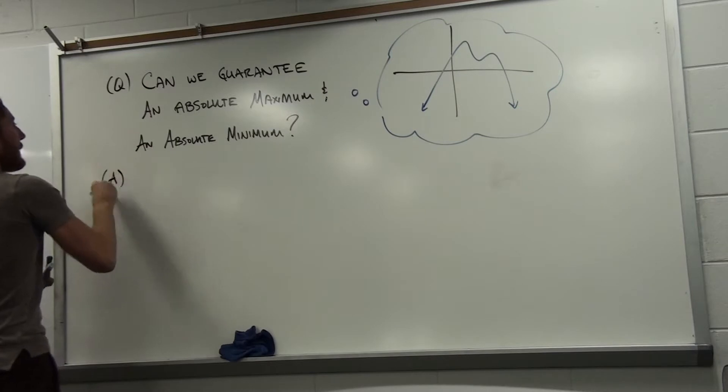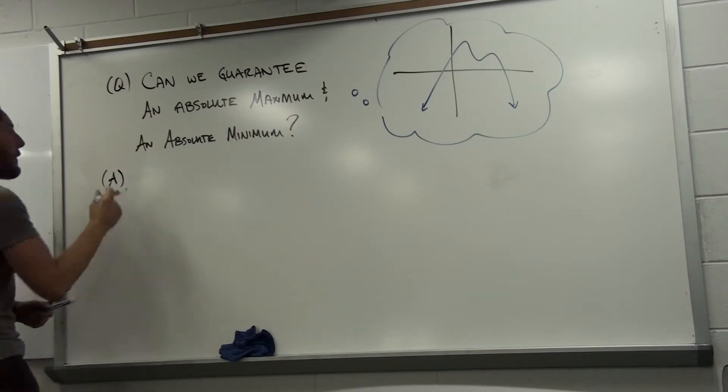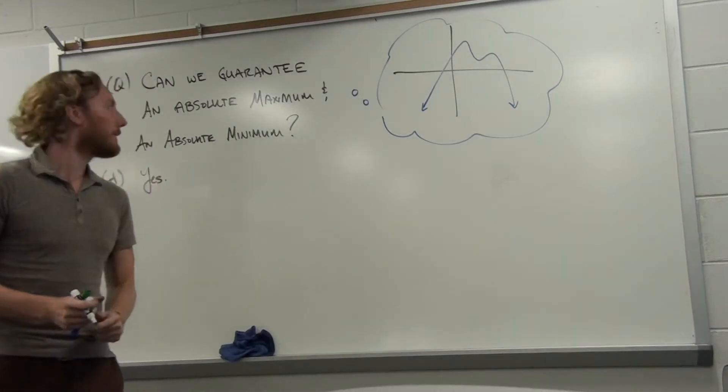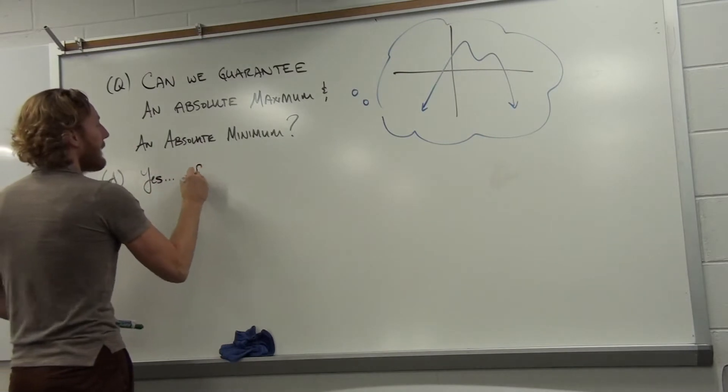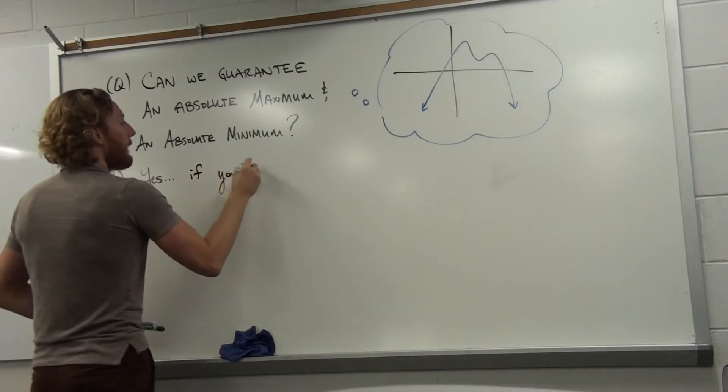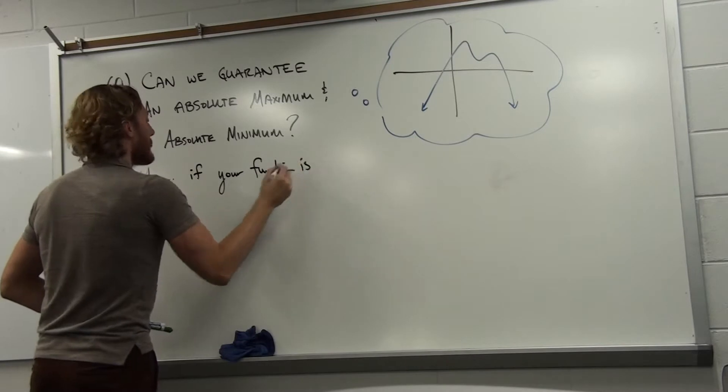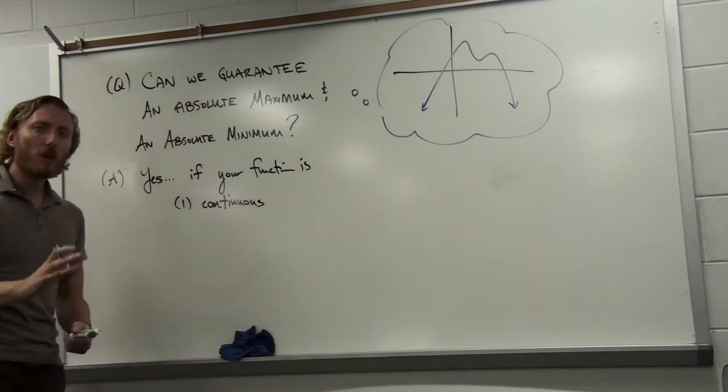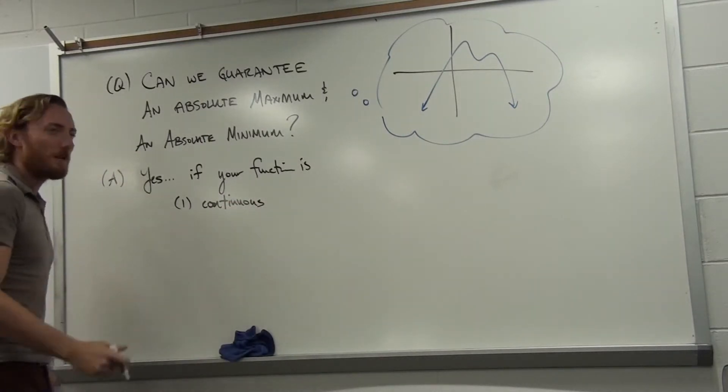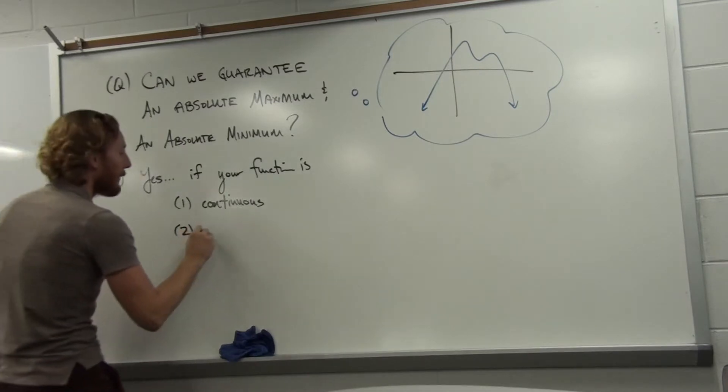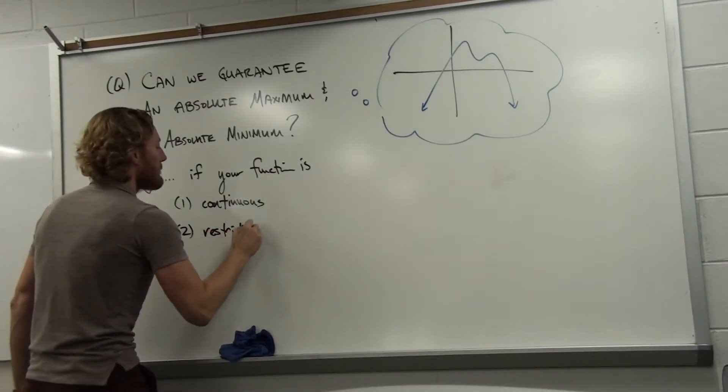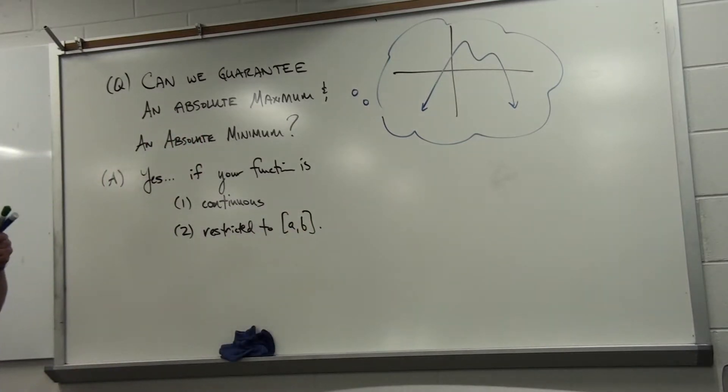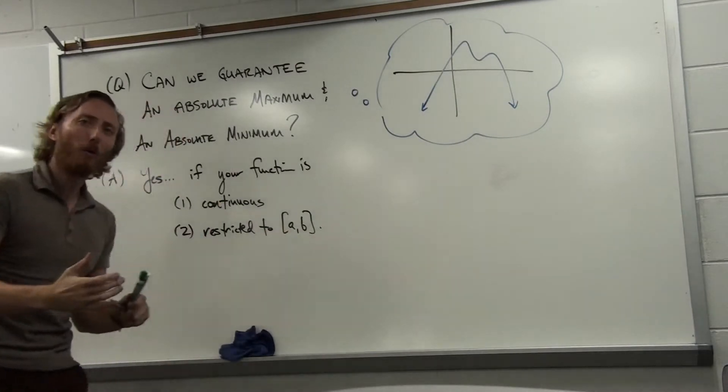To answer the question on the board, can we guarantee an absolute minimum or maximum? Yes, and my claim is it's going to take two things to do it. If your function is one, continuous - no holes, no jumps, no asymptotes. And two, if your function is restricted to the interval [a,b] where a and b are both included.